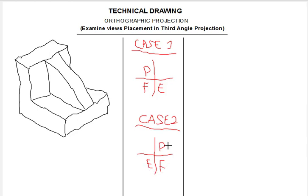So how are we going to obtain these views or these cases? This is the technique I teach you for drawing the views correctly — it's very simple. Let's say a question is asked and the direction of the view is given. You have an arrow, let's say arrow A. The question is asking you to view the component from this direction. How are we going to place the views in third angle projection?